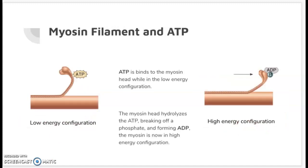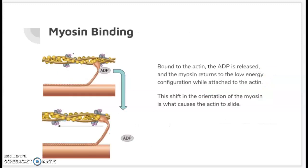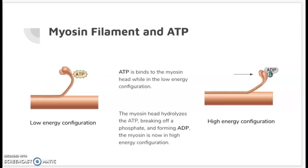On the left side we have a low energy configuration myosin. The ATP binds to the myosin while it is in low energy configuration. The myosin then hydrolyzes the ATP, causing it to lose one phosphate and become an ADP molecule. It is at this point that the myosin becomes a high energy configuration — remember that when ATP loses a phosphate it releases energy, which is why the myosin is now in the high energy configuration.